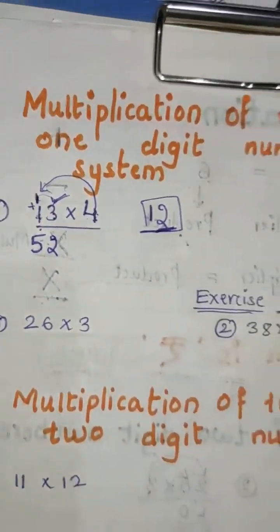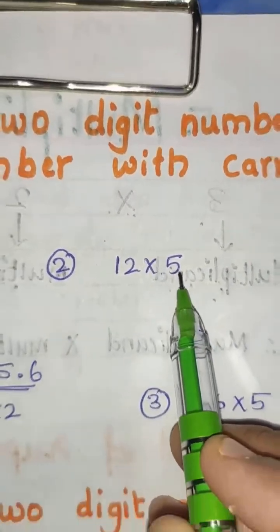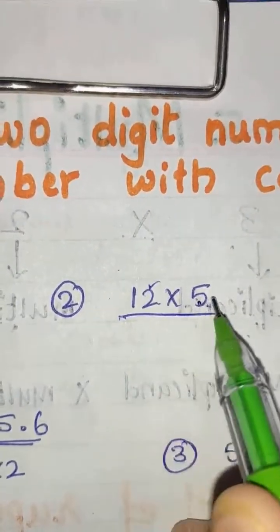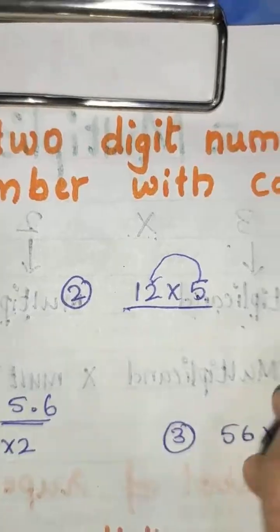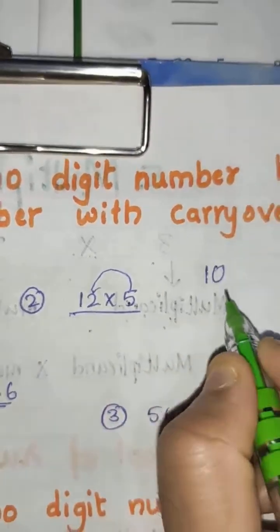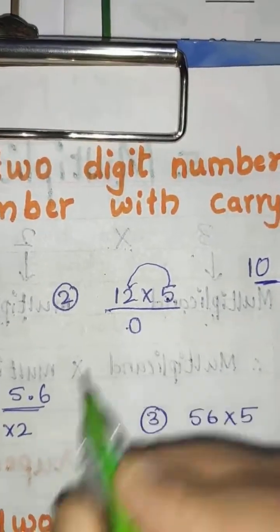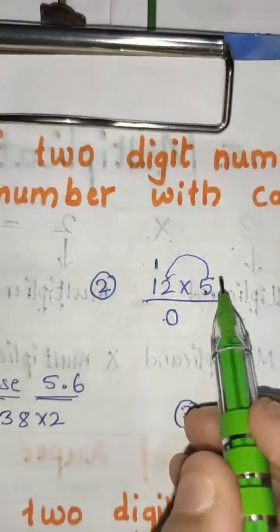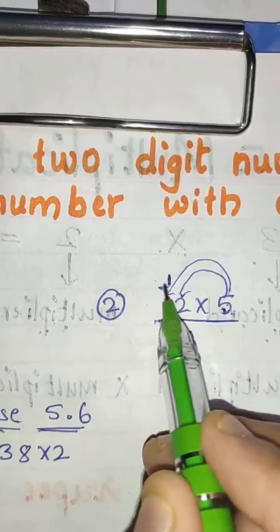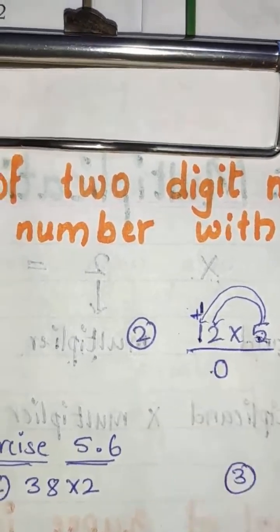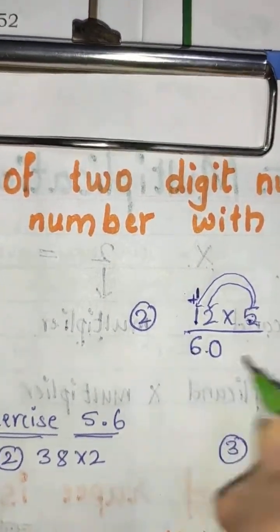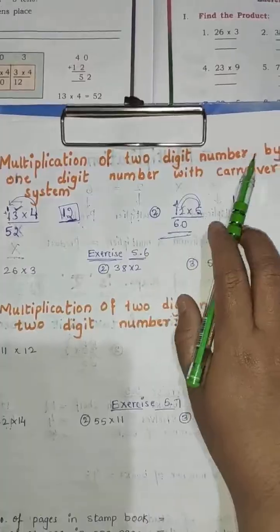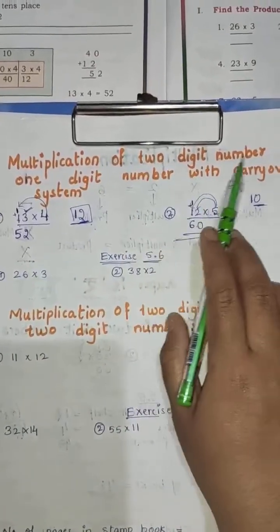Now let us take another example: 12 into 5. First we have to start multiplying from the unit place. 5 twos are 10. We can't write 10 here, so the right number 0 is written here and 1 will carryover to the tens place. Now 5 ones are 5, plus 1 is 6. So the answer is 60. This is multiplication of a 2-digit number by a 1-digit number with carryover system.